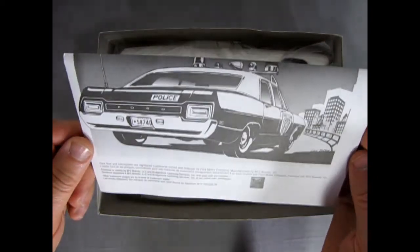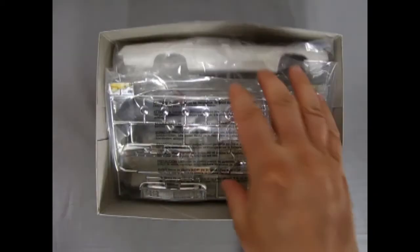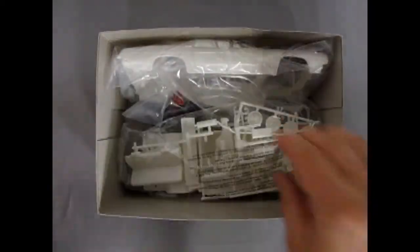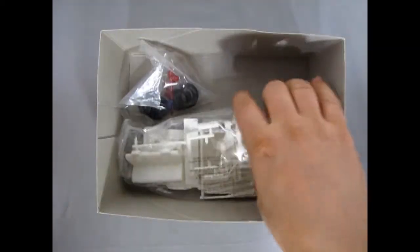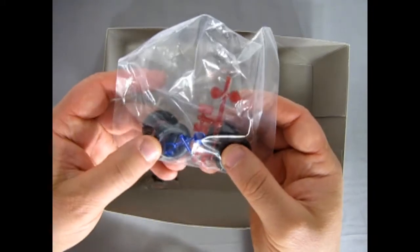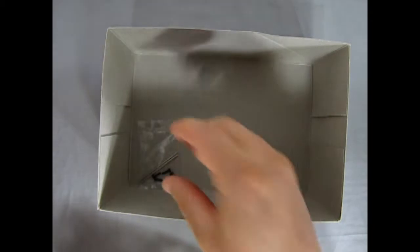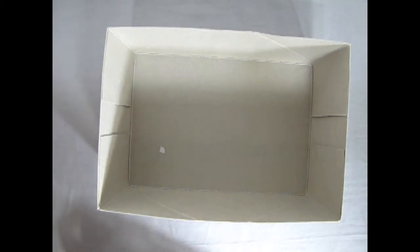So here we go removing the lid. There's some awesome police decals which I do believe are in the latest edition. There's our instruction sheet with this amazing artwork here done by Kirk Baron. Chrome in the bag as well as our police pursuit body, and there's our clear glass as well just tucked into the car.